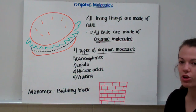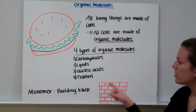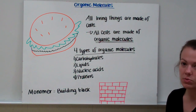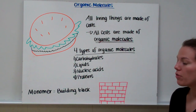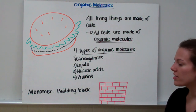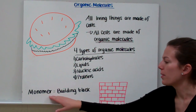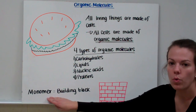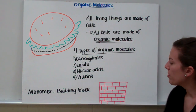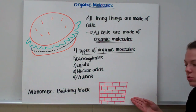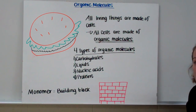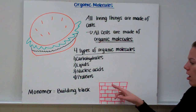If we take a closer look at each of these four organic molecules, we'll see that they are actually made of things as well. Whatever they're made of, or their building block, is called a monomer. A monomer is just a fancy way of saying what something's made out of. For example, the wall of the school is made up of bricks — so the monomer, or the building block of the school, is bricks.